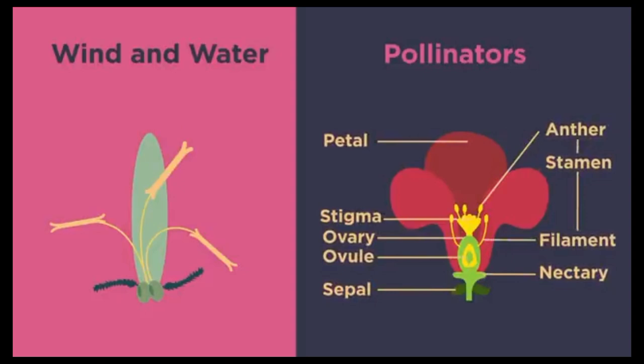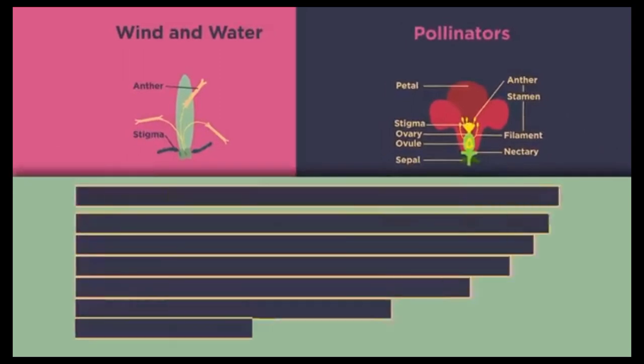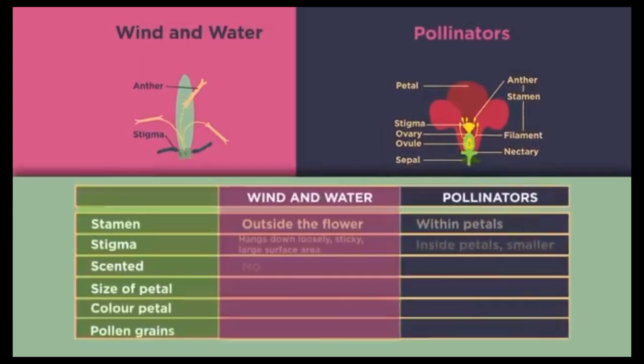Flowers pollinated by pollinators are structurally different from those pollinated by wind or water. Look at the differences in size, scent, and color of the petals, and the positioning of the stamen and style. Here are some key differences — why do you think they are different?